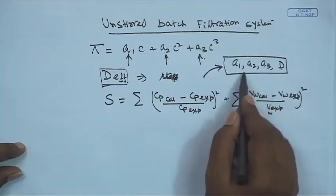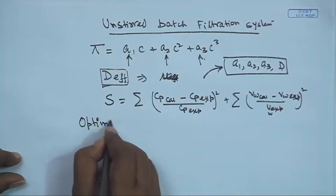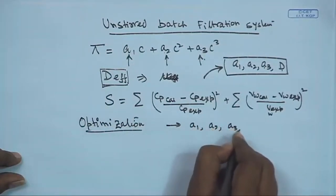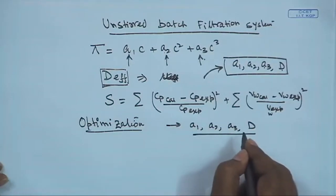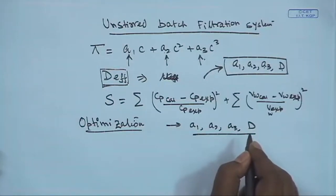If this sum is not less than a tolerance value, then we re-guess this set of parameters, directed by a proper minimization or optimization algorithm. So we will be doing an optimization method for evaluating the system parameters. Then a1, a2, a3, and D of the system will be estimated. Once estimated, for unknown operating conditions we can run our model equations in a predictive mode to predict the system performance.